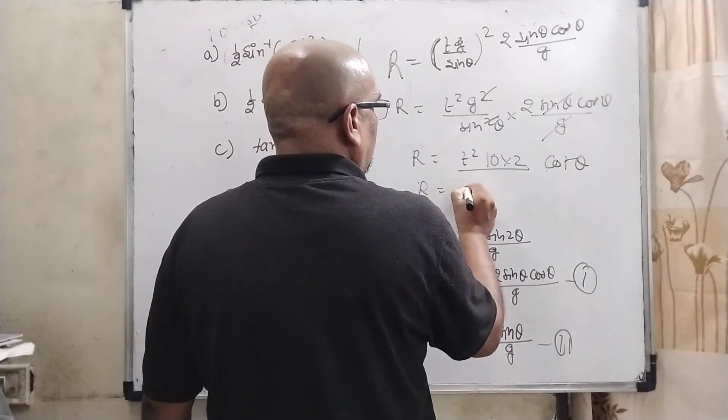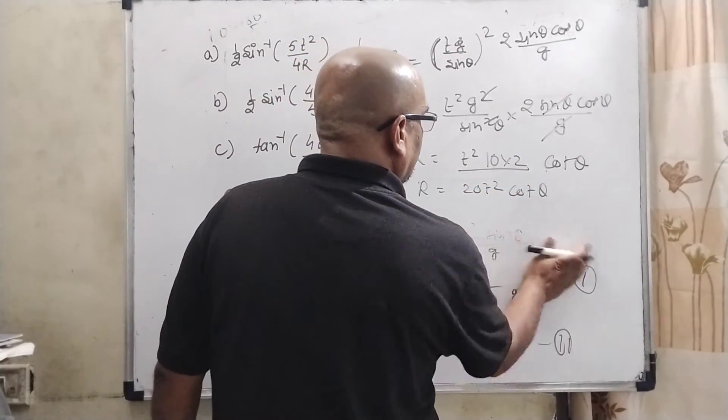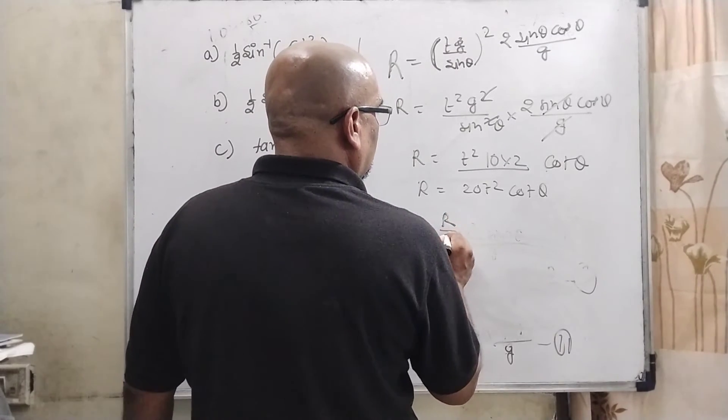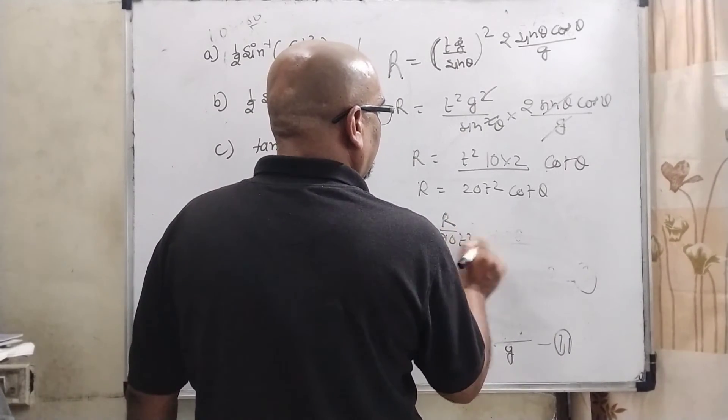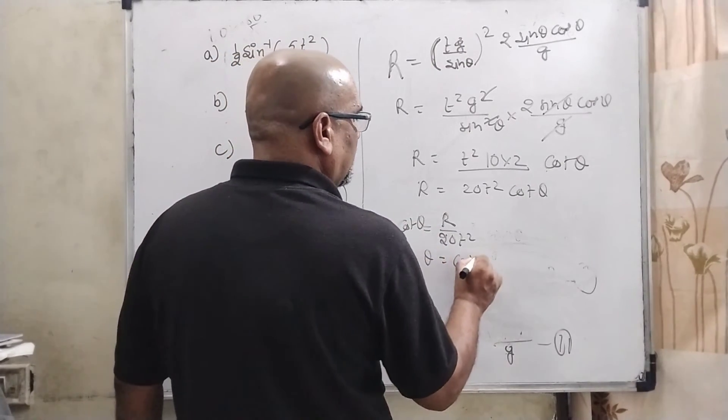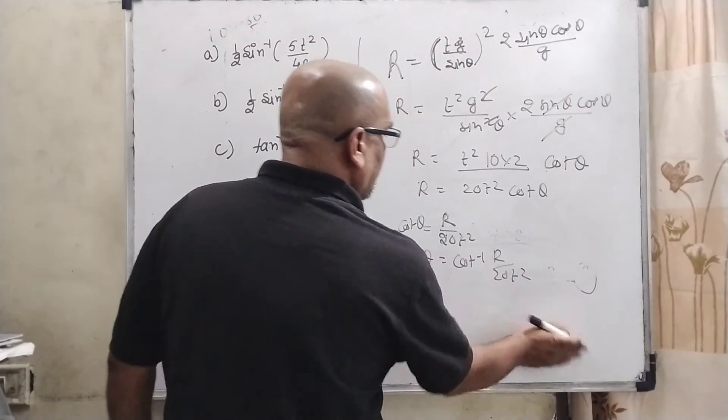Then R = 20t² cot θ. Then R / 20t² = cot θ. Then θ = cot inverse R / 20t². This is the value of theta.